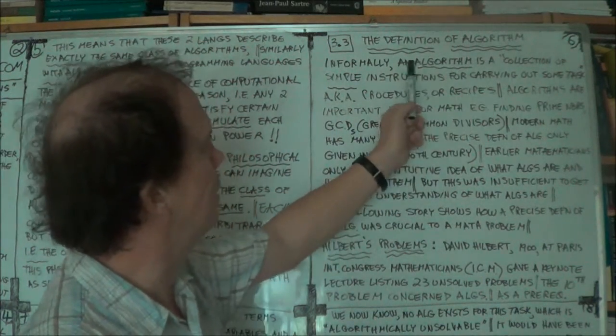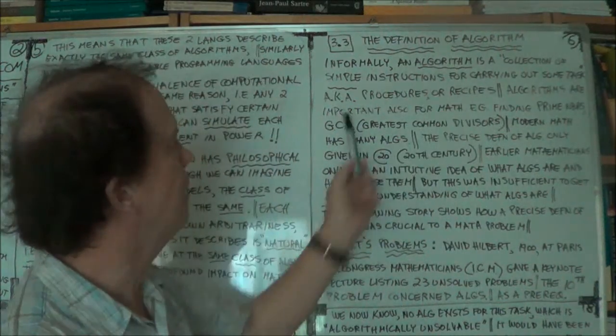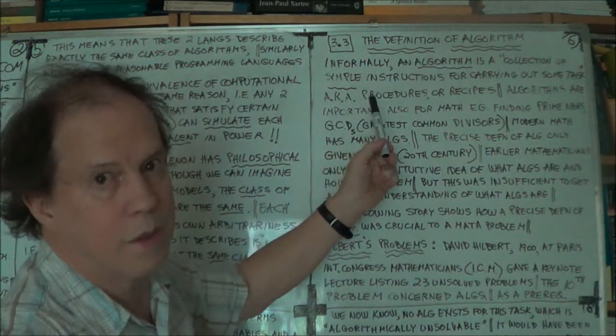So informally, an algorithm is just a set of instructions you carry out some task, also known as other words, other labels.